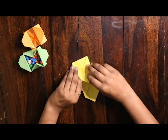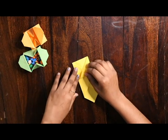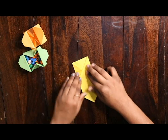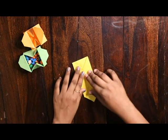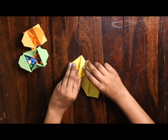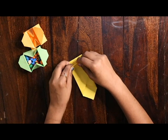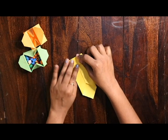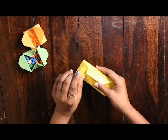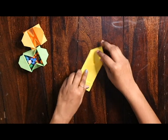Now take this diamond shaped triangle and fold it inwards like this. Now take it and fold it like this. Do the same with the other side.